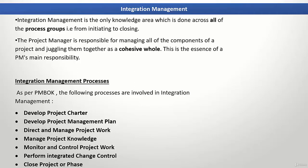Let's talk about an example of how integration management can be done on a project and how different processes can be integrated together. For example, if you're making a bridge as a product and you want to increase the quality of the bridge, this means you will have to consider what changes will be required to the schedule and cost.